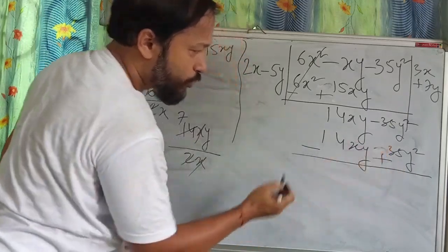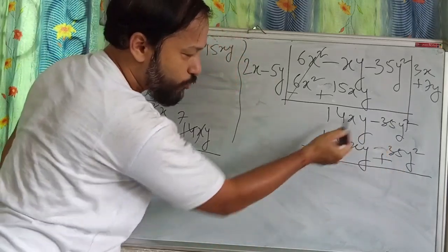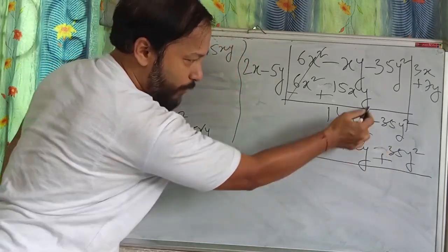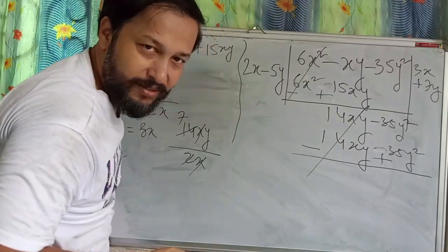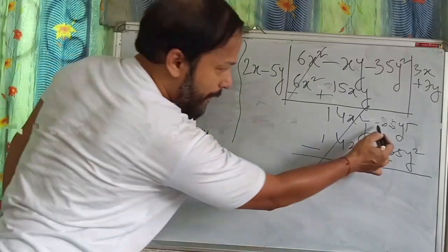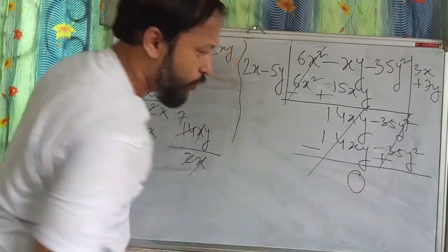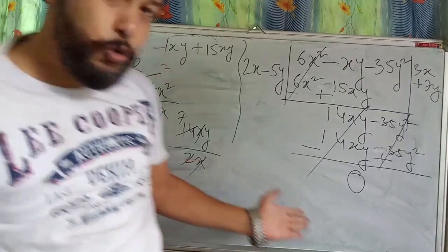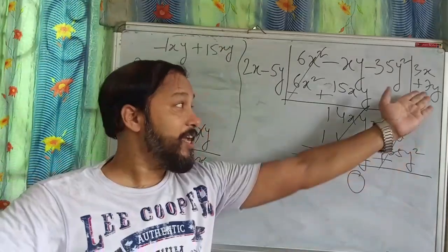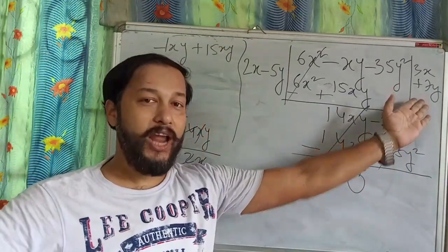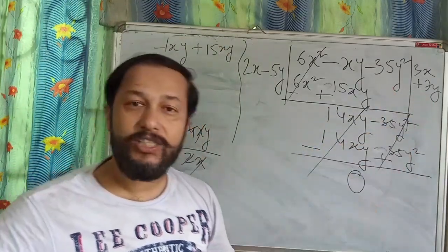Plus 14xy minus 14xy cancels. Minus 35y² plus 35y² also cancels — giving zero. So the quotient is 3x plus 7y and the remainder is zero.